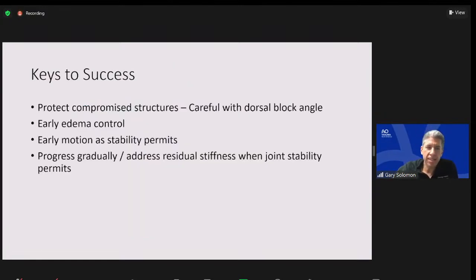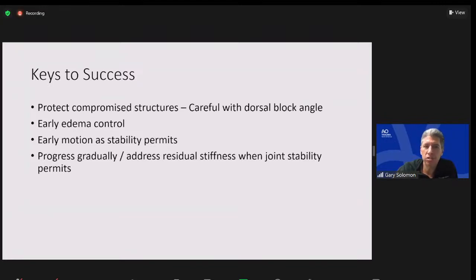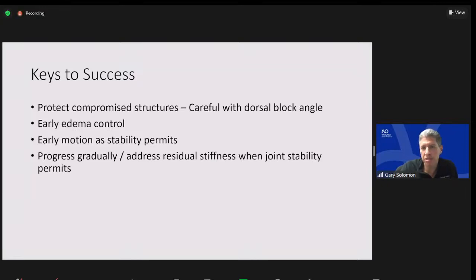Keys to success: protecting the compromised structures. As we were saying about educating residents and primary care — just figure out what structures are involved and splint towards that direction and you're going to be safe. You have to be careful with that dorsal block angle — it can be very deceiving. Early edema control is extremely important because the PIP joint is not forgiving. We want to do early motion as stability permits, then progress gradually and address residual stiffness as joint stability permits.